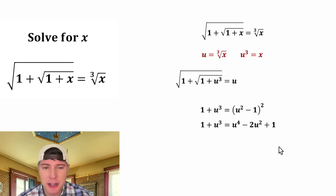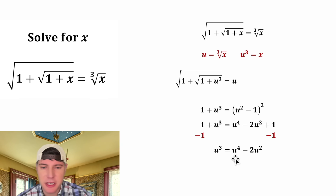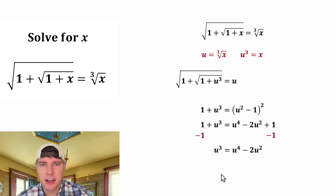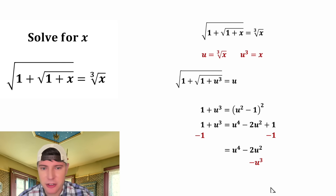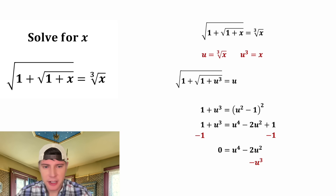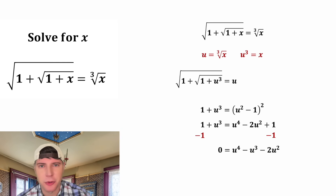Now we have a 1 on both sides of the equation, so let's subtract 1 from both sides. We'll be left with u cubed equals u to the fourth minus 2u squared. Let's set everything equal to 0 by subtracting u cubed from both sides — on the left-hand side these cancel, leaving 0, and on the right-hand side we have u to the fourth minus u cubed minus 2u squared.